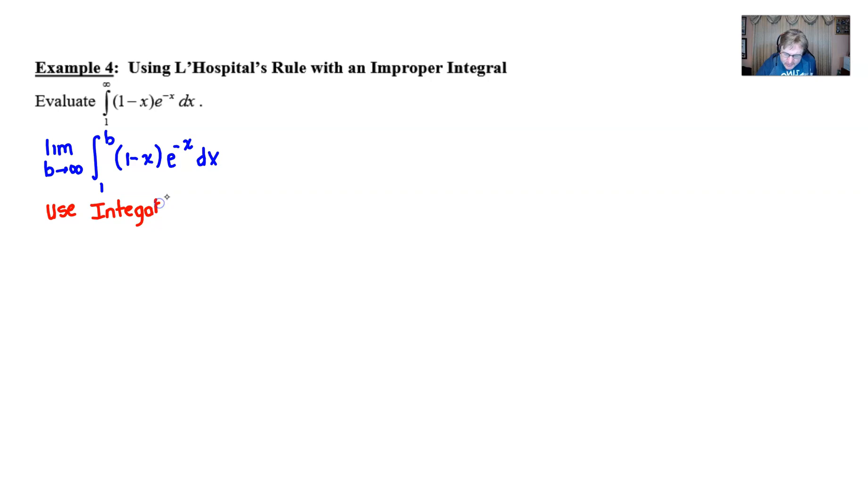These two components are certainly being multiplied together. You have a 1 minus x, and then you have an e to the negative x. And in between, you see a multiplication, at least an invisible multiplication. So that's a good indicator that you use integration by parts.